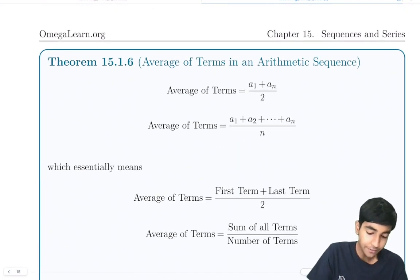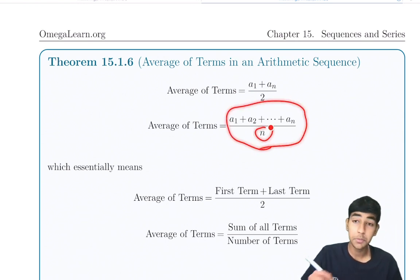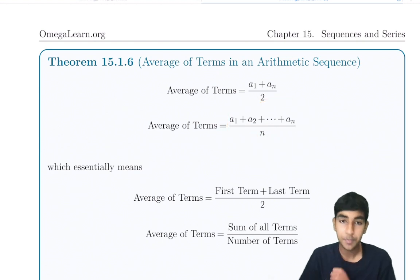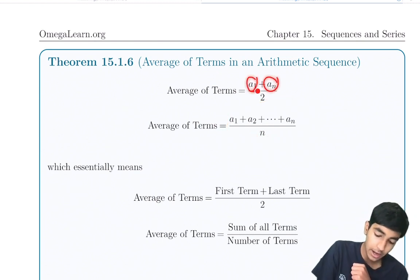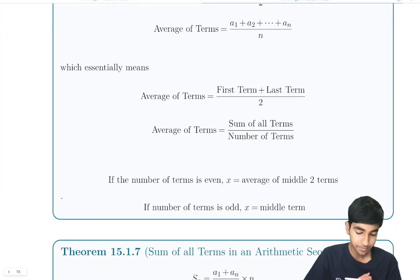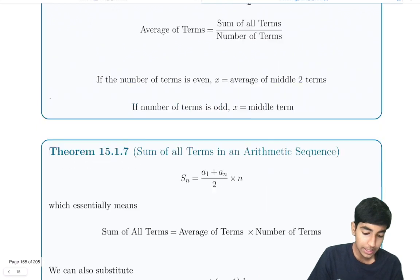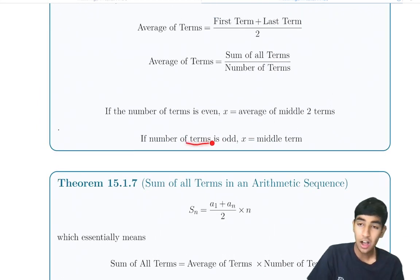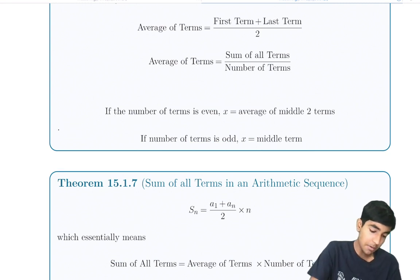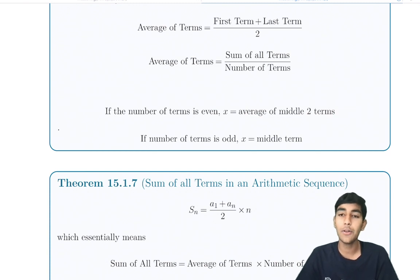The average of the terms in an arithmetic sequence is the sum of all terms divided by the number of terms, but there's a shorthand: it's just the first term plus the nth term, divided by 2. So the average of the first and last terms is a shortcut. If the number of terms is odd, the average equals the middle term. If the number of terms is even, the average equals the average of the two middle terms.